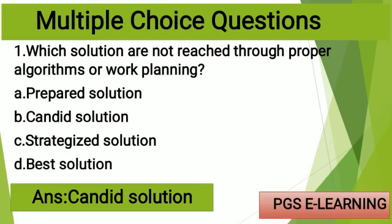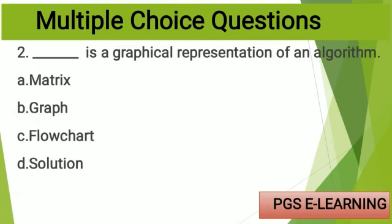MCQ number two: blank is a graphical representation of an algorithm. Option A: matrix, Option B: graph, Option C: flowchart, Option D: solution.